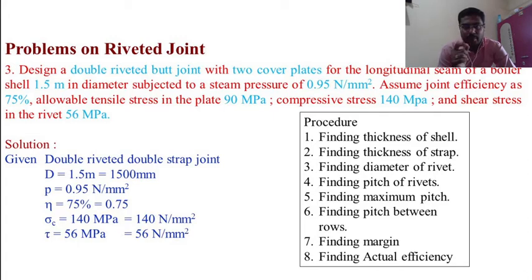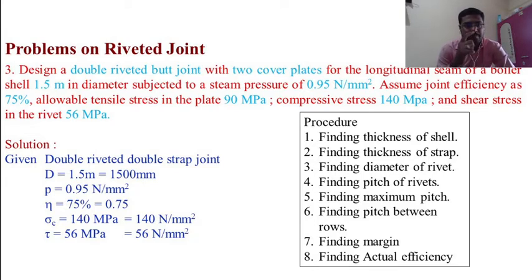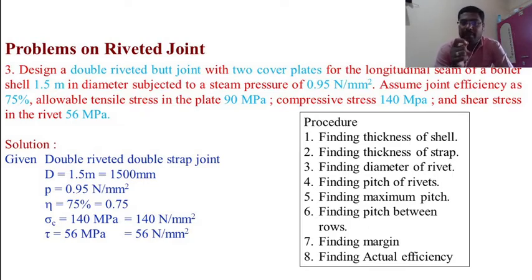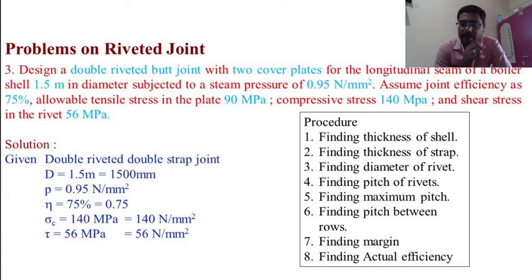This is a double riveted butt joint with two cover plates for the longitudinal seam of a boiler shell. Diameter of the boiler shell D = 1.5 m = 1500 mm. Steam pressure = 0.95 N/mm². Joint efficiency η = 75%. Allowable tensile stress σt = 90 MPa, compressive stress σc = 140 MPa, and shear stress in the rivet τ = 56 MPa.